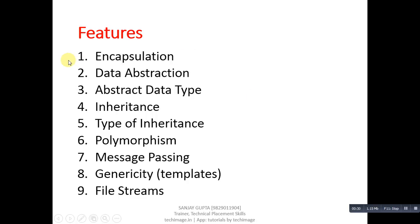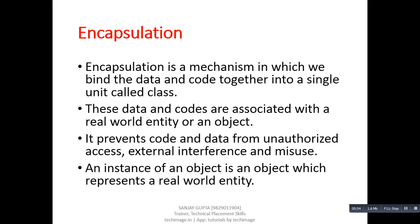Now, features of C++. As you can see, there are a total of nine features listed in this slide. The first one is encapsulation, second data abstraction, third abstract data type, fourth inheritance, fifth types of inheritance, sixth polymorphism, seventh message passing, eighth genericity, and ninth file streams. I am going to discuss these features in detail.